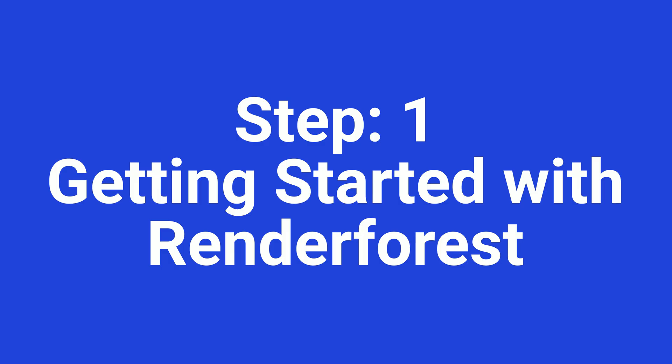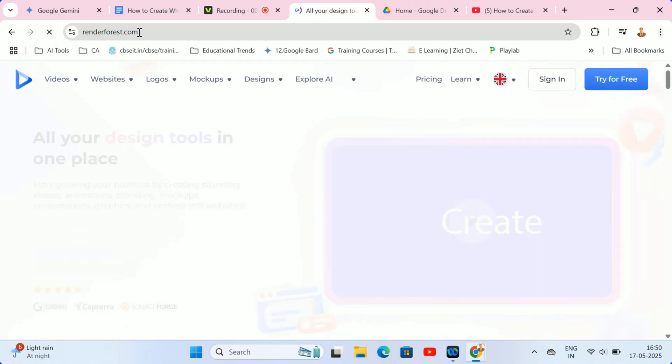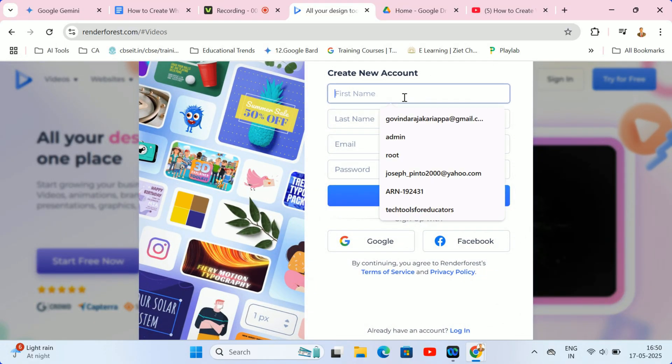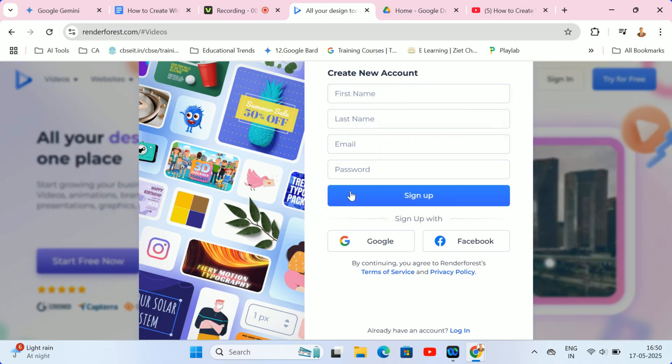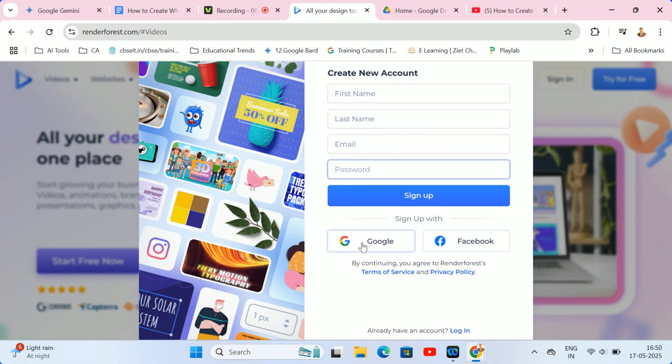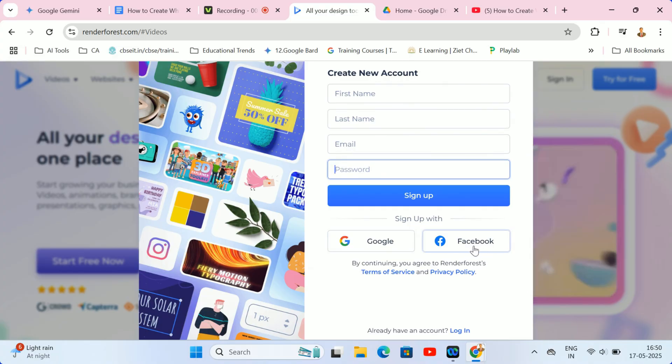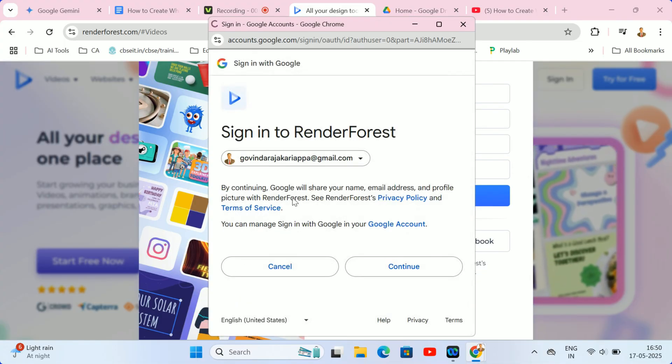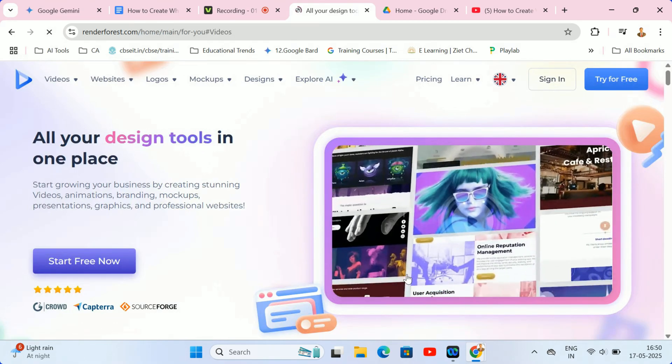Step 1. Getting started with Renderforest. Ready to unleash your creativity with stunning whiteboard animations? The first step is super simple. Just head over to renderforest.com. Signing up is lightning fast, and you've got options. You can breeze through the process by connecting your Google or Facebook account, or if you prefer, just enter a few basic details like your name, email, and a password. Whichever way you choose, you'll be inside and ready to create in no time.